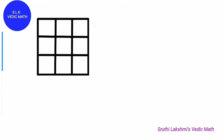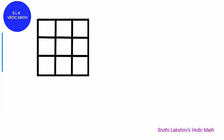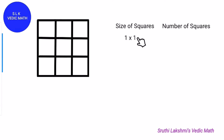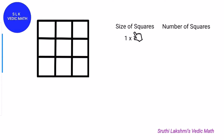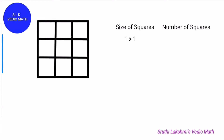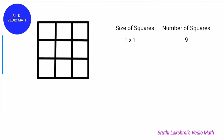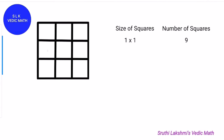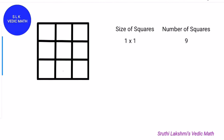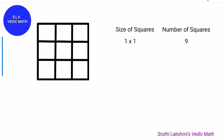Let's see how many squares are there in this 3 by 3 grid. First, find the number of 1 by 1 squares. Since it's a 3 by 3 grid, there are 9 one-by-one squares: 1, 2, 3, 4, 5, 6, 7, 8 and 9.